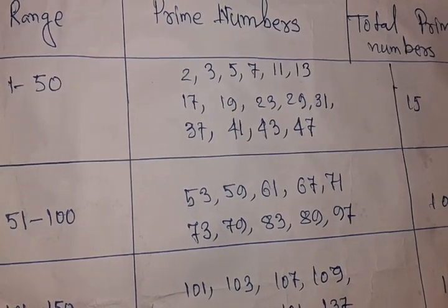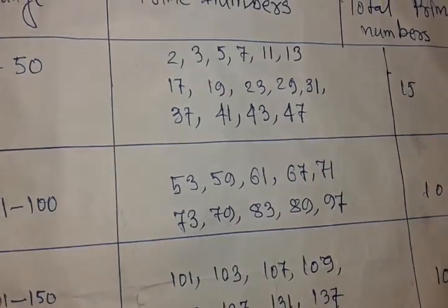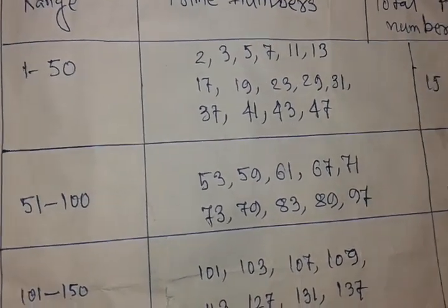23, 29, 31, 37, 41, 43, 47. So friends, 1 to 50 there are 15 prime numbers.